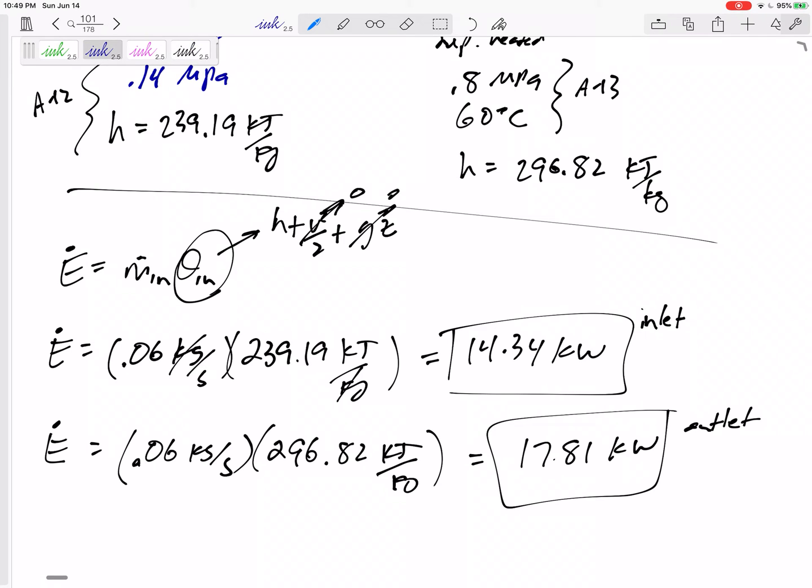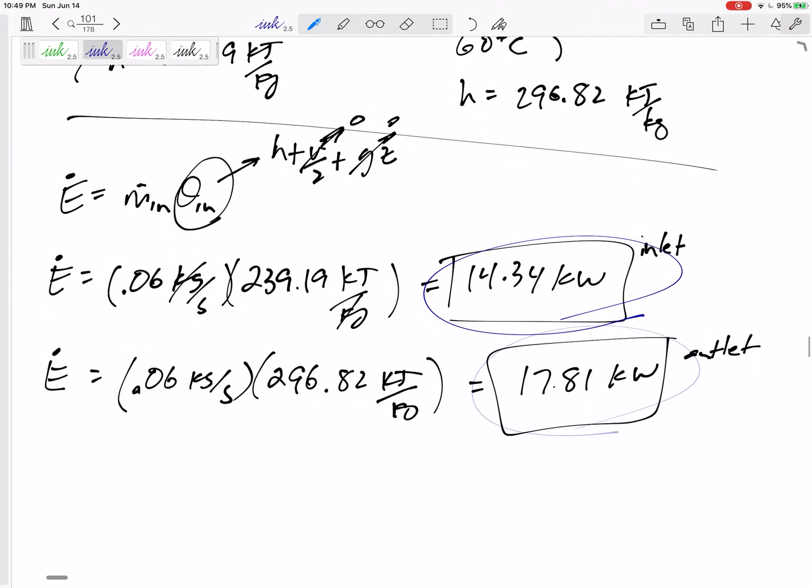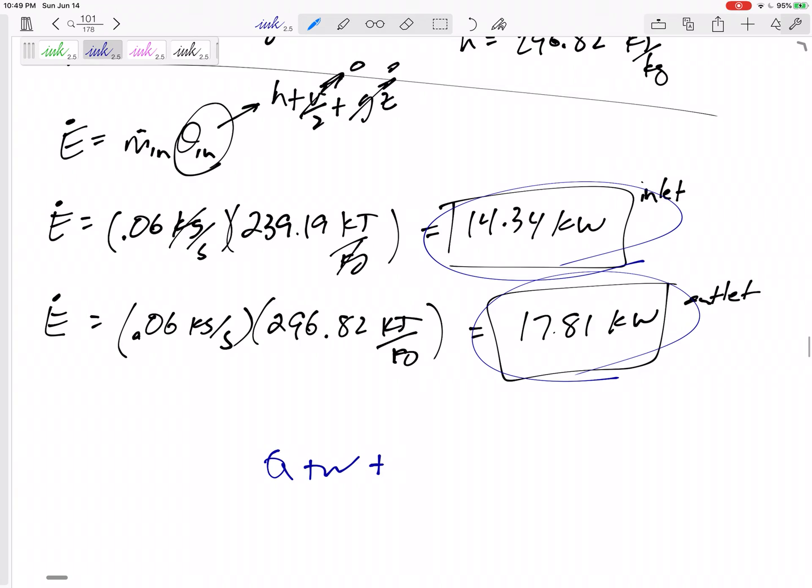So we were not looking at this just yet, but why aren't they equal? Well, because maybe there's some Q, maybe there's some work, maybe there are some other things in here. That's what we're going to look at in the next section, is taking those and putting those into our conservation of energy equals change in E, right? So this might be the E of the outlet, negative 17.81. This might be the inlet, 14.34. And then we might have some other things going on right here. That is something to look forward to in the next section. We'll see you next time. Bye.